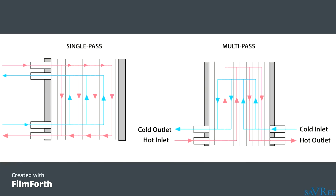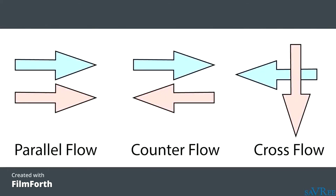Flow through a plate heat exchanger may be parallel, cross, or counter. Plate heat exchangers usually use counter flow, as this is the most efficient type of flow for heat transfer. Counter flow is also sometimes known as contra flow.